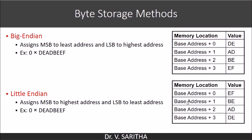In little endian, the least address means the base address. So EF will be stored at the base address. BE is stored at base address plus 1. AD is stored at base address plus 2. DE is stored at base address plus 3. This is little endian.